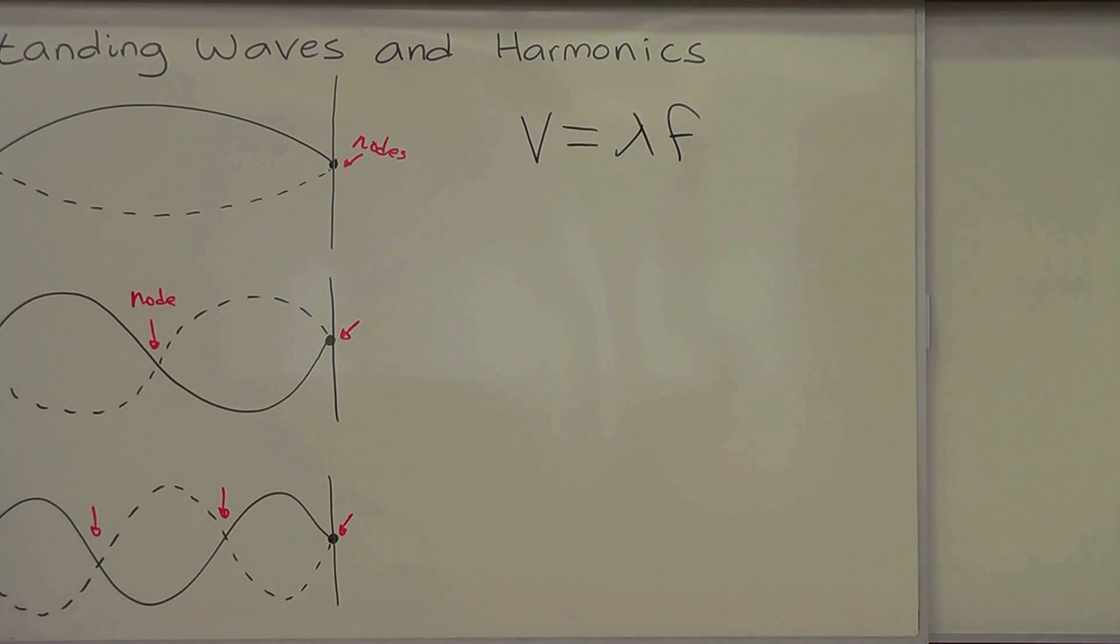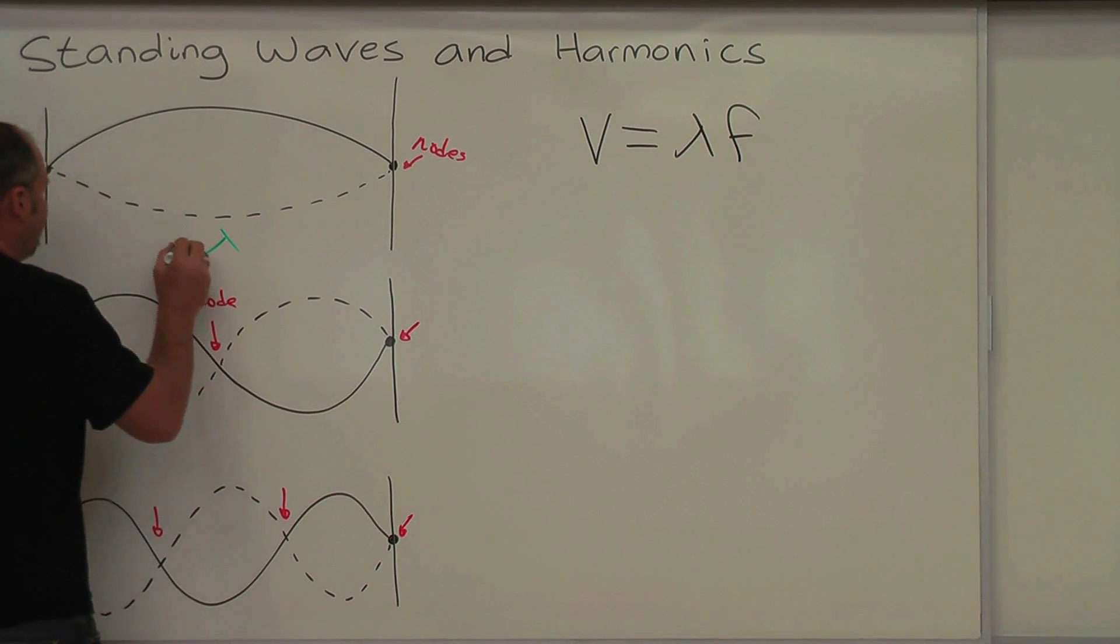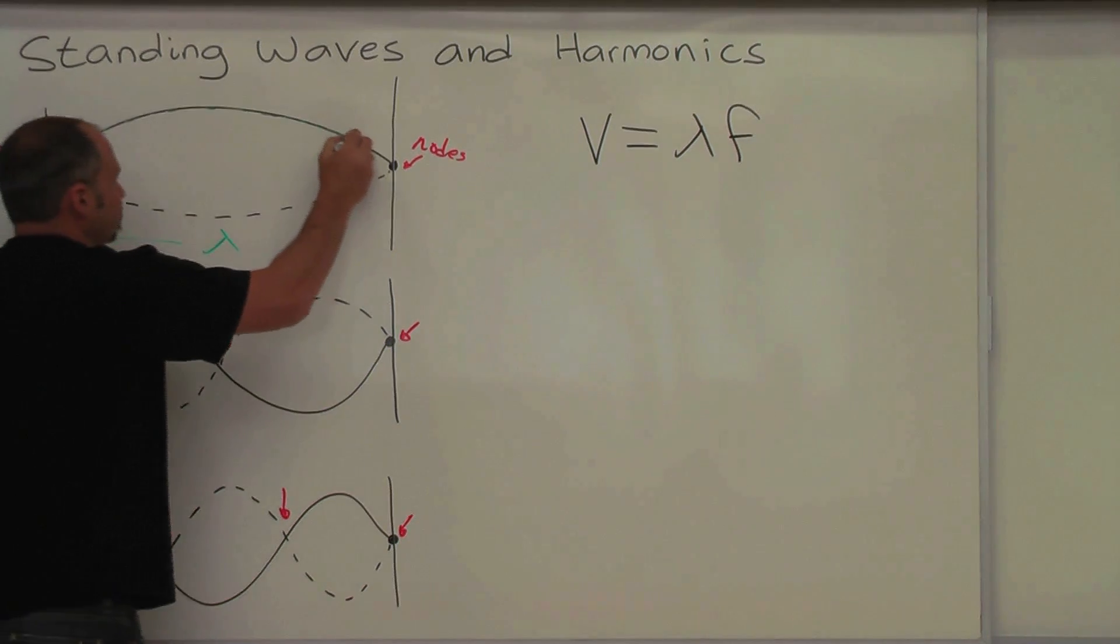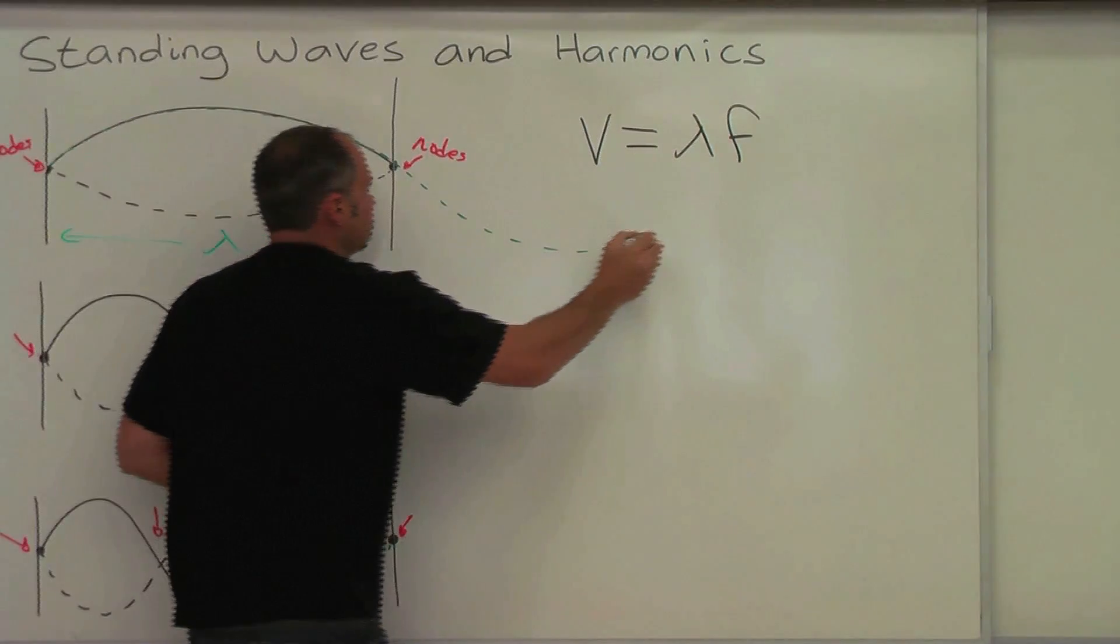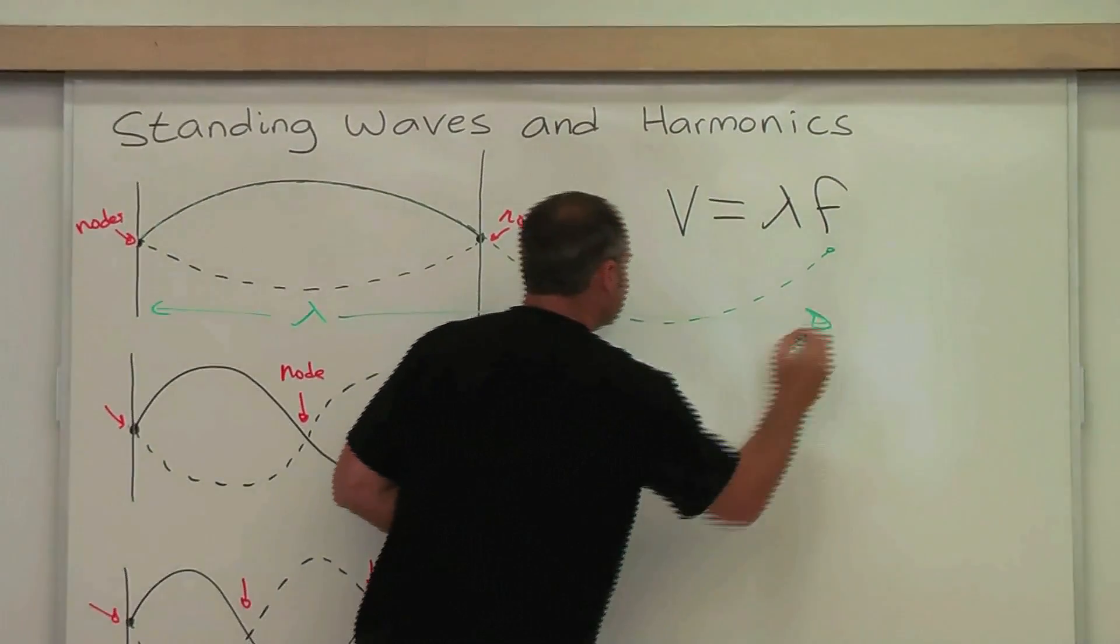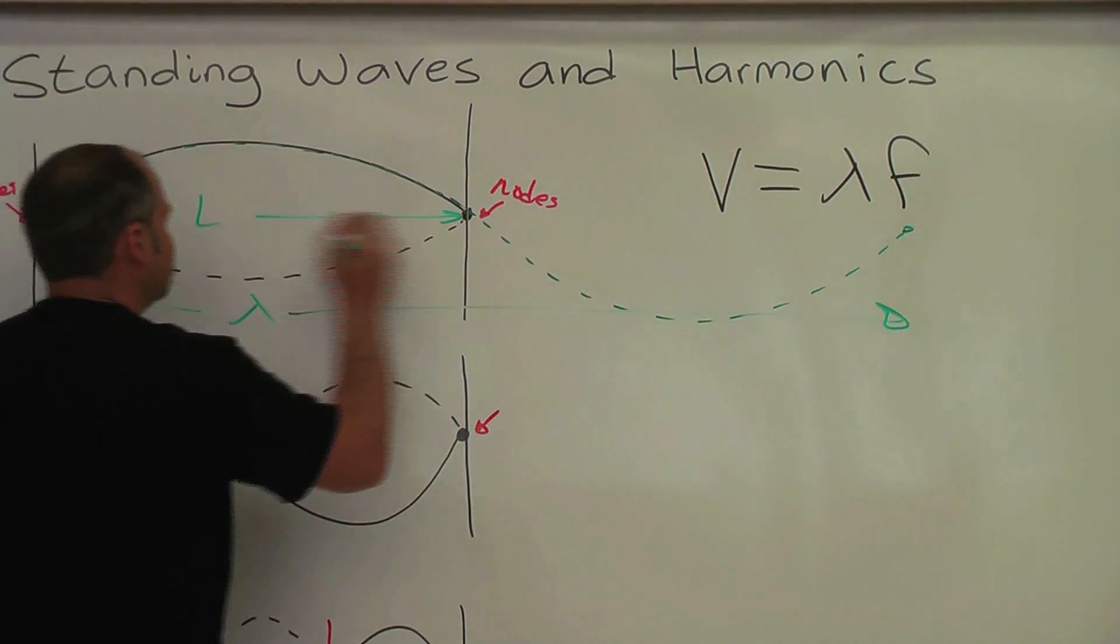First thing to do is to measure this distance. A full wavelength goes like this. So a full wavelength would be this. The length of the string is obviously just this distance.